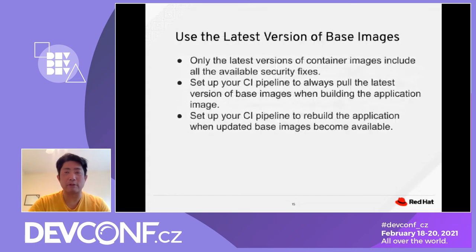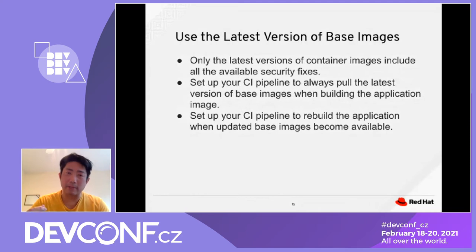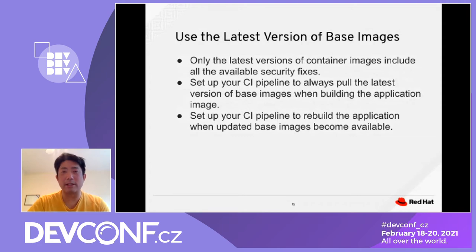Use the latest version of any base image. The base image contains the latest security fixes and bug fixes. Set up your CI/CD pipeline to always pull the latest image so that when there's an image change you will get a failure and go back to fix your code. Set up your CI/CD pipeline to rebuild the application using the updated base image.